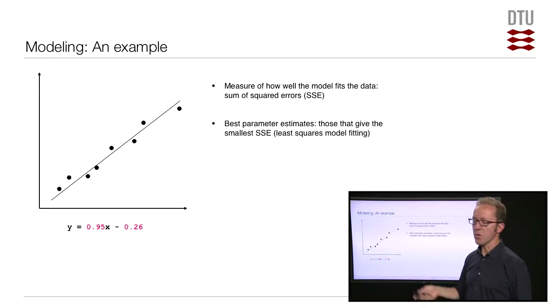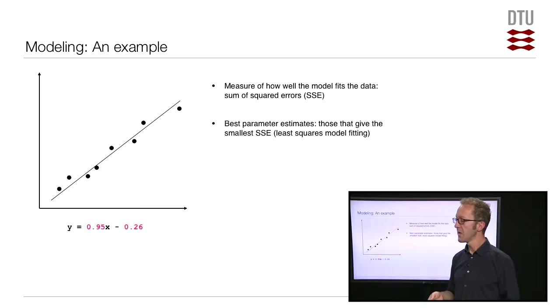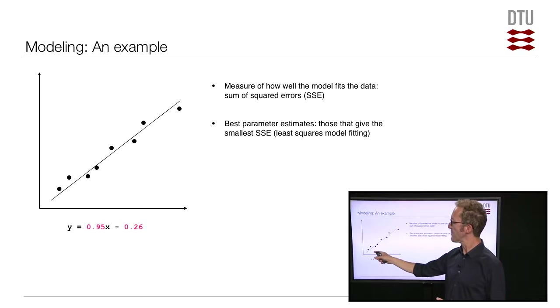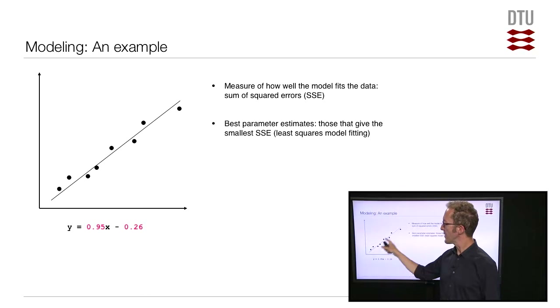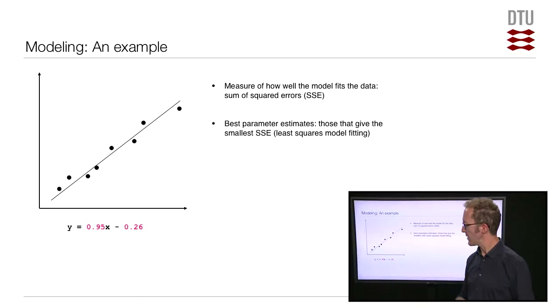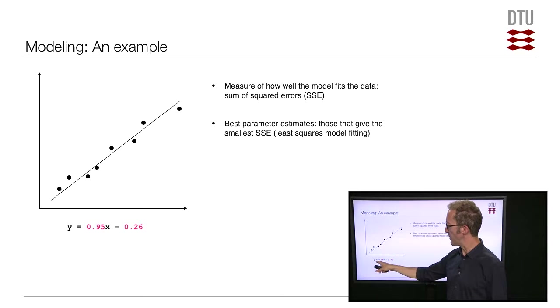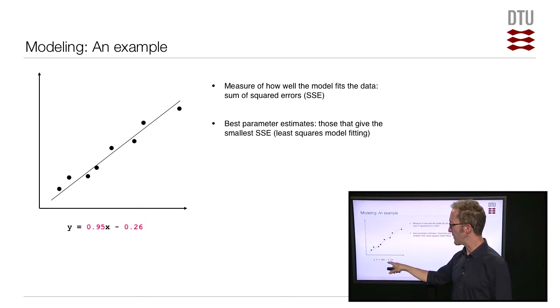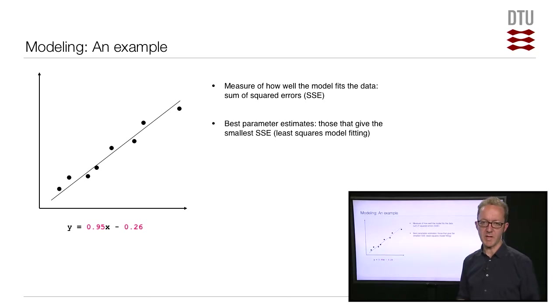That's what your pocket calculator does when it does linear regression — it is minimizing the sum of squared residuals. And maybe the best parameter estimates are 0.95 and minus 0.26, like in this example.